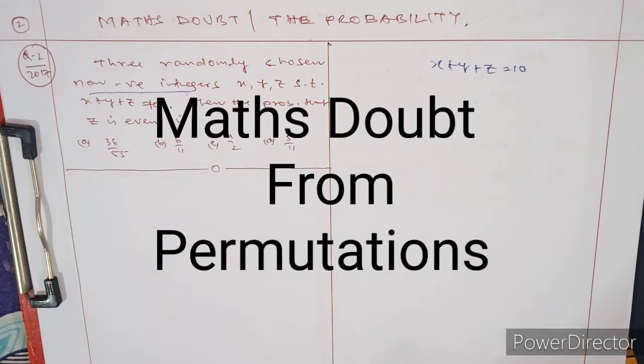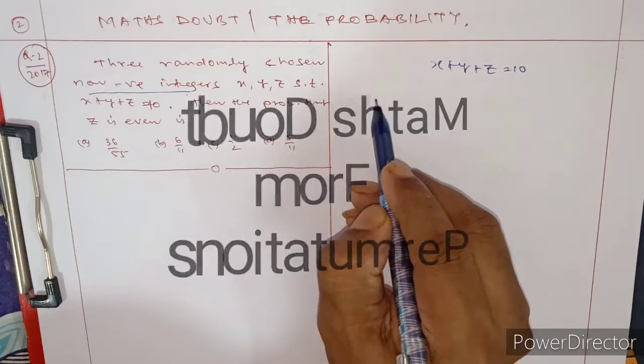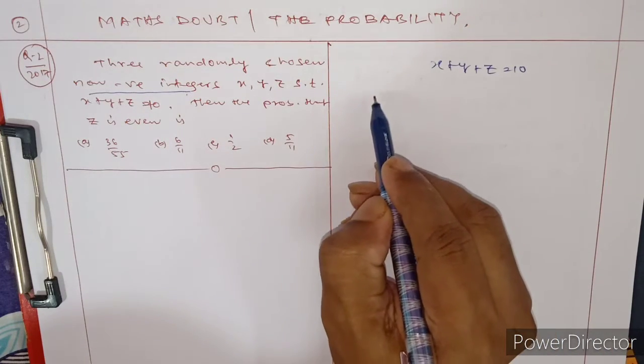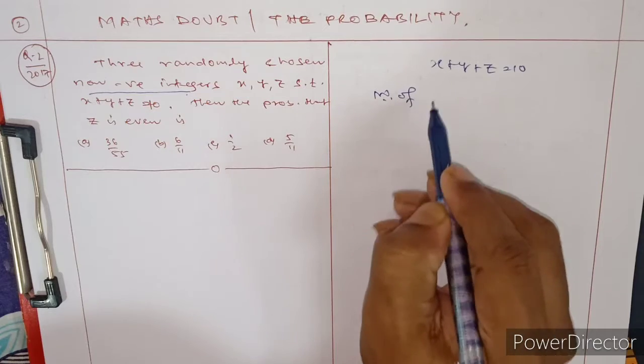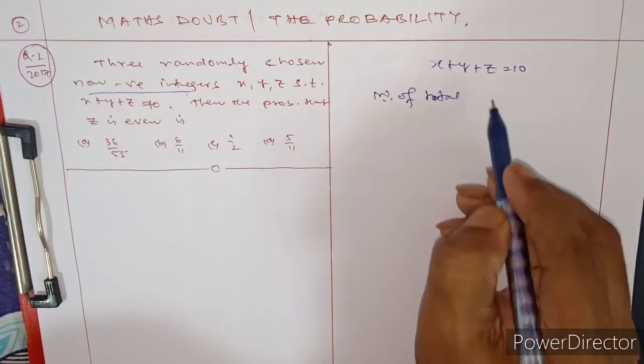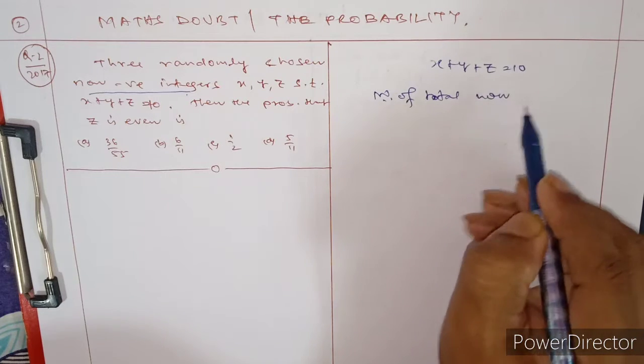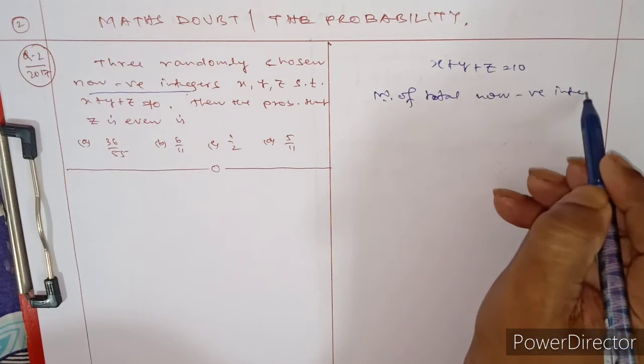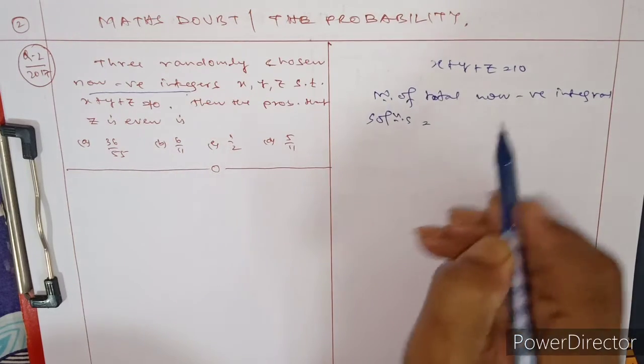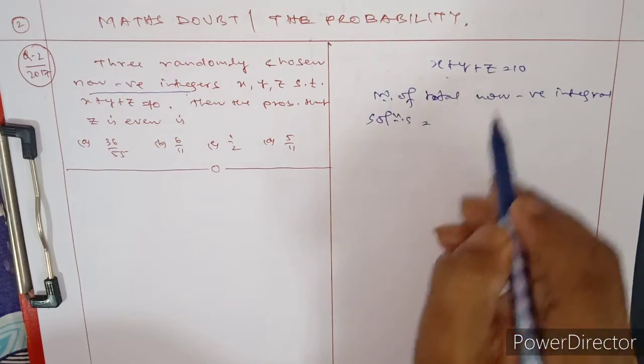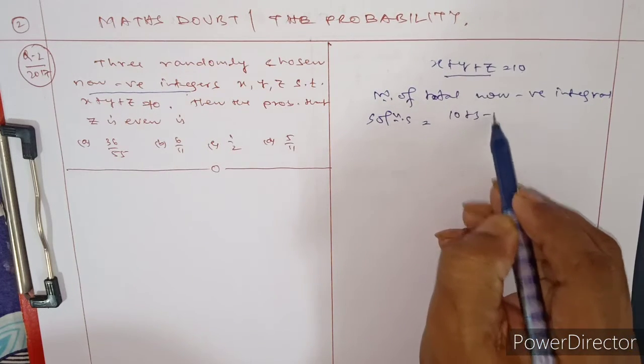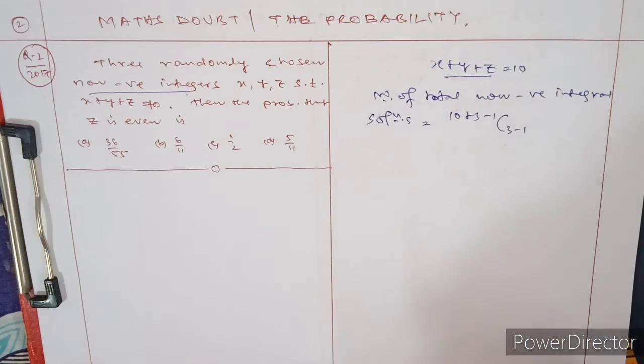The total number of non-negative integral solutions is given by the formula: 10 + 3 - 1, C 3 - 1. You will consider this as 10 plus 3 minus 1, C of 3 minus 1. This we consider using multinomial theorem.